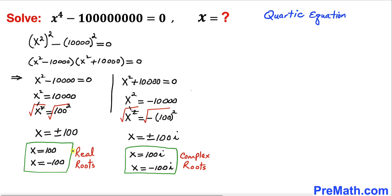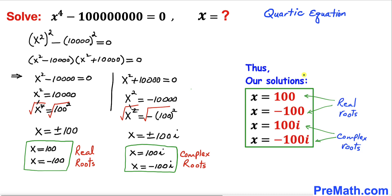Now let's make an observation. We can see that these two roots are our real roots, whereas these two roots are complex roots. And thus here are our four solutions: x = 100, x = -100, x = 100i, and x = -100i.